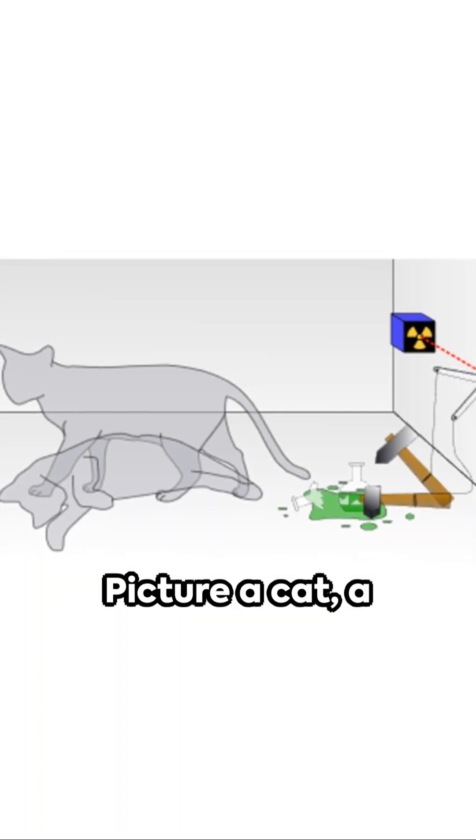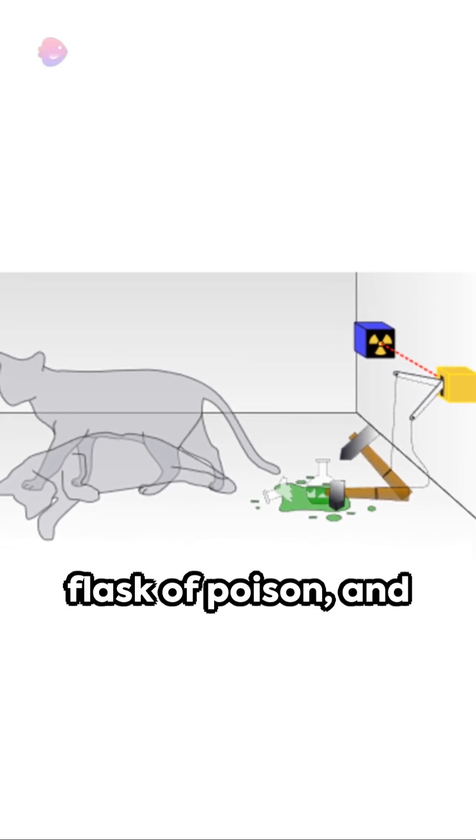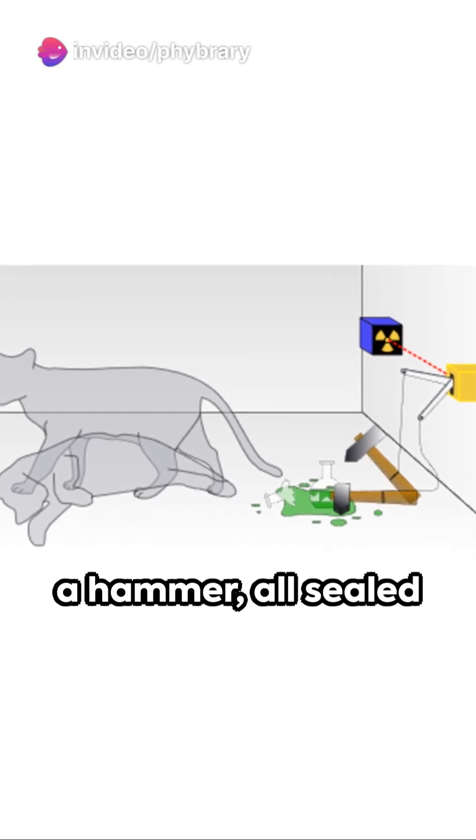Picture a cat, a radioactive atom, a Geiger counter, a flask of poison, and a hammer, all sealed in a box.